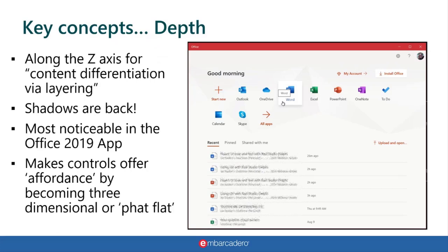The other key concept is depth — along the Z-axis, meaning how three-dimensional something is. As I hover over the Microsoft Word icon, it pops up and gives you a three-dimensional layer. This screenshot is from the Microsoft Office 365 Launcher, which is fully Fluent UI — one of their proof of concepts for the design. You can see a button that says 'Install Office' with a shadow behind it to make it stand out. Shadows are back: even though they told us to flatten everything, Fluent UI and the new UI 3 bring back some depth.